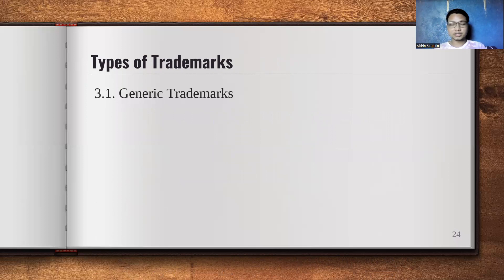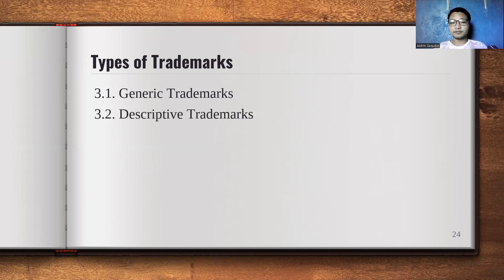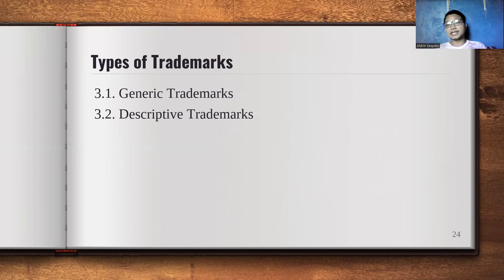There are different types of trademarks. First, generic trademarks — the weakest type, which can be copied by others. These include phrases like BDO's 'We Find Ways' or Jollibee's 'Bida ang Saya.' Second, descriptive trademarks — from the word describe, it directly describes the product, for example 'cold and creamy' for an ice cream.